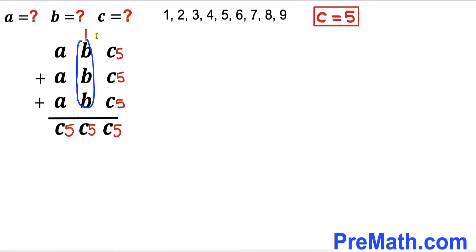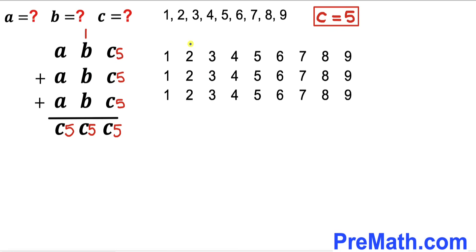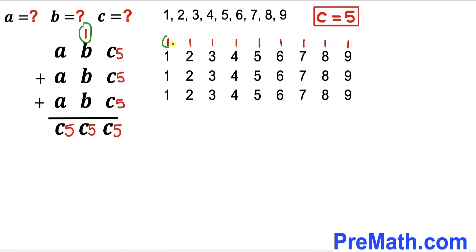Now we focus on the tens column. We add B+B+B plus the carry of 1, and we need the ones digit of that result to equal 5. We'll try all values for B, adding 1 as the carry-over each time.